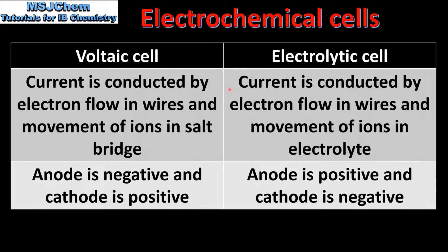In an electrolytic cell the current is conducted by electron flow in wires and movement of ions in the electrolyte. In a voltaic cell the anode is negative and the cathode is positive, whereas in an electrolytic cell the anode is positive and the cathode is negative.